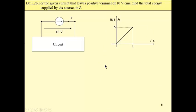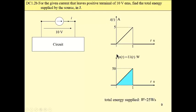Now let me change the circuit such that the current is ramped up until one second. Following exactly the same reasoning, we multiply this current by the DC voltage to obtain instantaneous power. This is the instantaneous power, and this field, which is a positive element, satisfies the active sign convention — this field is the total energy applied.